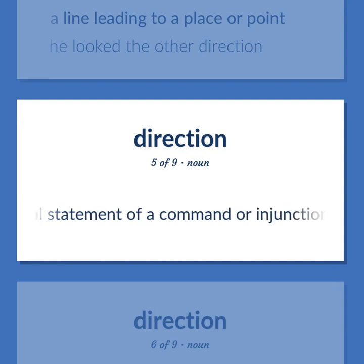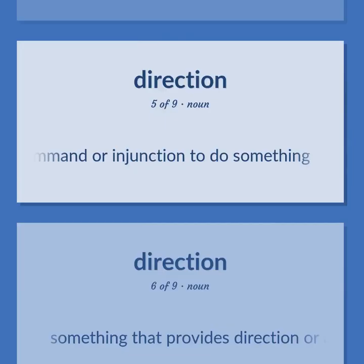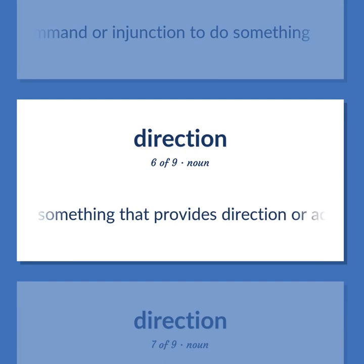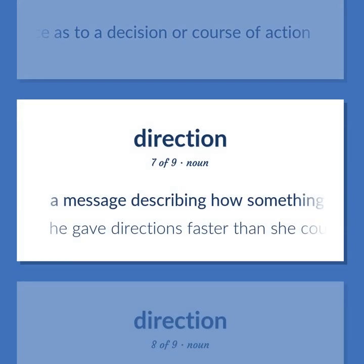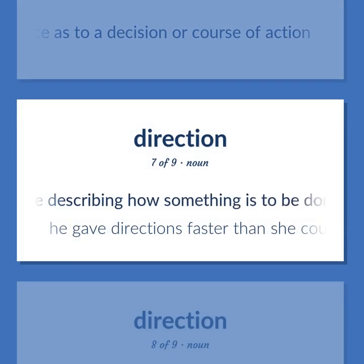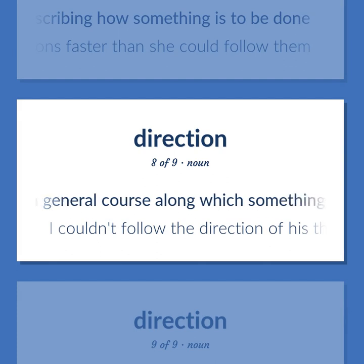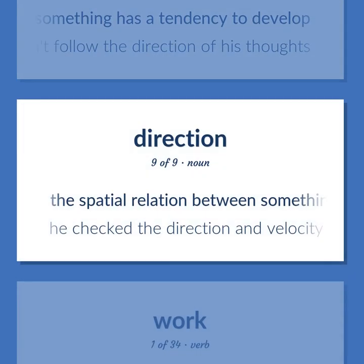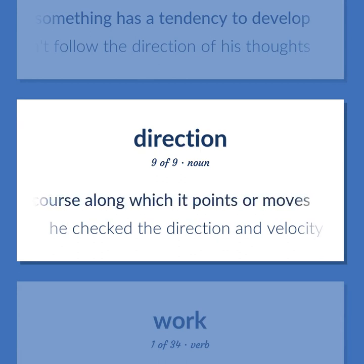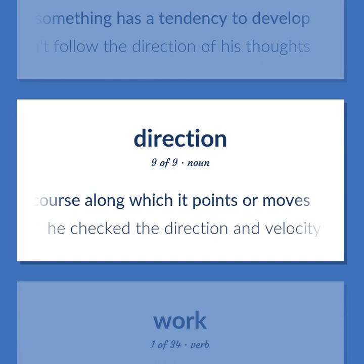Direction: a formal statement of a command or injunction to do something; something that provides direction or advice as to a decision or course of action; a message describing how something is to be done. He gave directions faster than she could follow them. A general course along which something has a tendency to develop. I couldn't follow the direction of his thoughts. The spatial relation between something and the course along which it points or moves. He checked the direction and velocity of the wind.